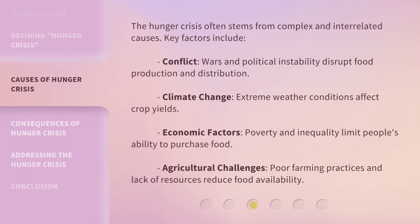The hunger crisis often stems from complex and interrelated causes. Key factors include conflict — wars and political instability disrupt food production and distribution. Climate change — extreme weather conditions affect crop yields.